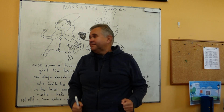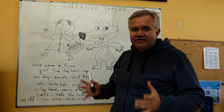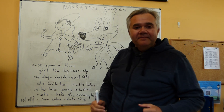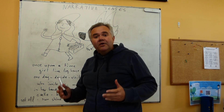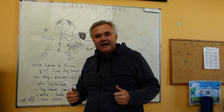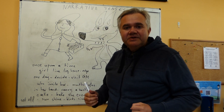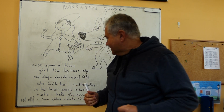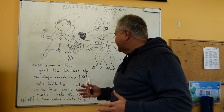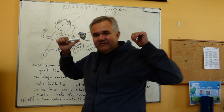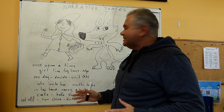So how does a fairy tale start? Once upon a time there was a little girl called Little Red Riding Hood, who lived in a log house at the edge of the forest. One day she decided to visit her grandma, who had invited her a few months before.